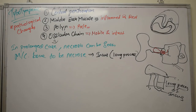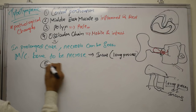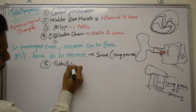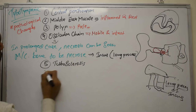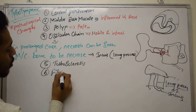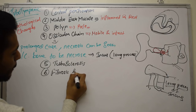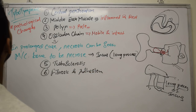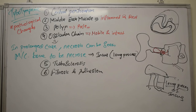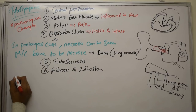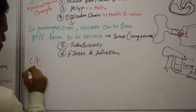We may also see tympanosclerosis, fibrosis, and adhesion — these are very rare pathological changes in tubotympanic type. Now let's discuss the clinical features of tubotympanic type.